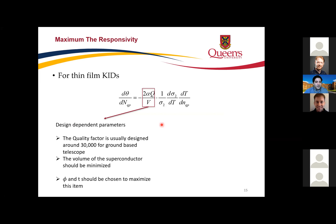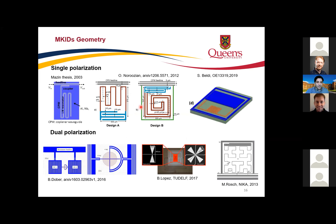For better sensitivity in MKIDs, geometry matters. When designing, you should target an intrinsic quality factor of around 30,000, as fabrication limits higher values. The first type of MKID geometry was a quarter-wavelength resonator. Switching to the lumped-element geometry gave much better sensitivity and response. There is also a double-folded spiral geometry that gives somewhat better results in terms of crosstalk and absorption, as it can absorb dual polarization.